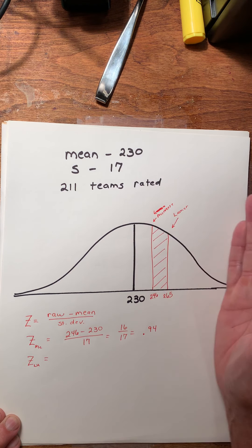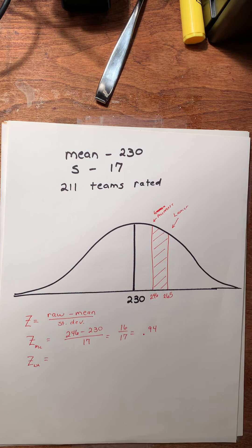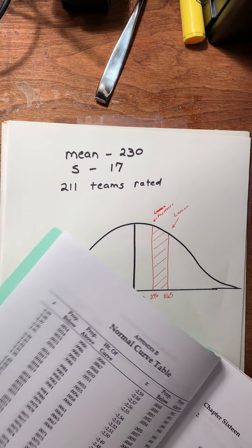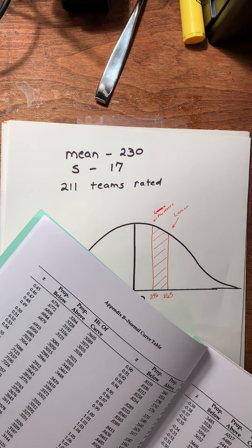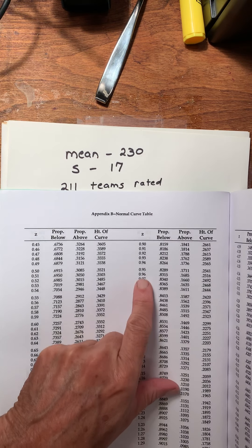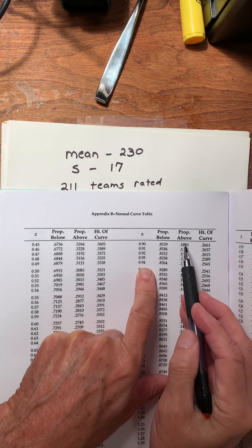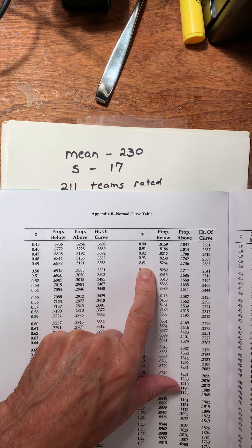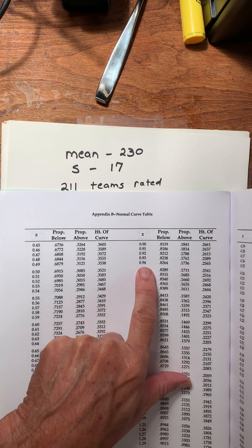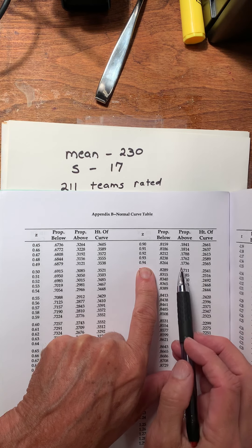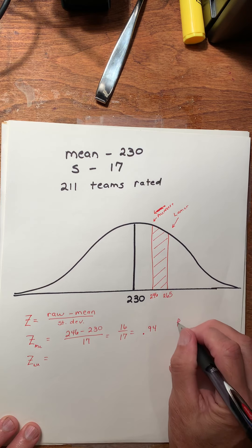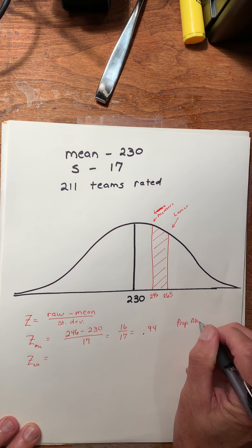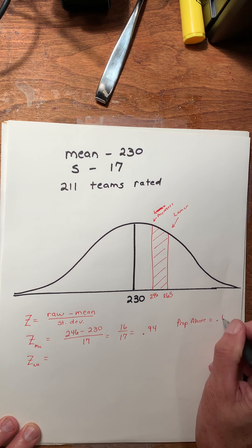What I'm going to do with 0.94, that's my Z number, I want to find how much is above a value with a 0.94 Z number. So I'm going to look in my chart, and it's the stuff above when Z is 0.94. Let's find Z is 0.94. Here it is, 0.94. I want the amount above, and that's 0.1736.